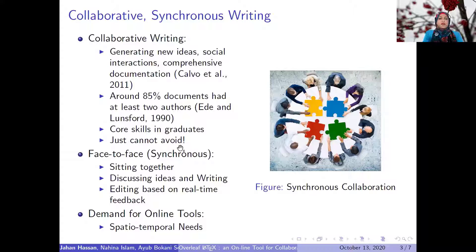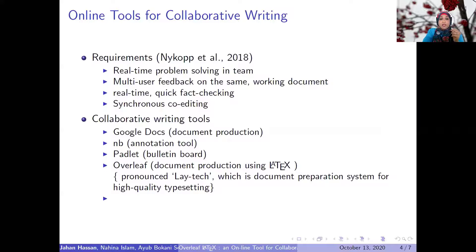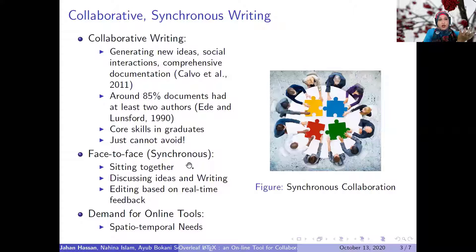There are requirements at times when we are collaboratively writing that we need synchronous editing, synchronous activity, and synchronous exchange of ideas — which is easier to achieve when we are physically together in a meeting room. We can sit together, discuss ideas, write together, and edit based on real-time feedback. This is what the synchronous requirement demands from this activity. Therefore there is actually a demand for online tools that would mimic or provide all these features.